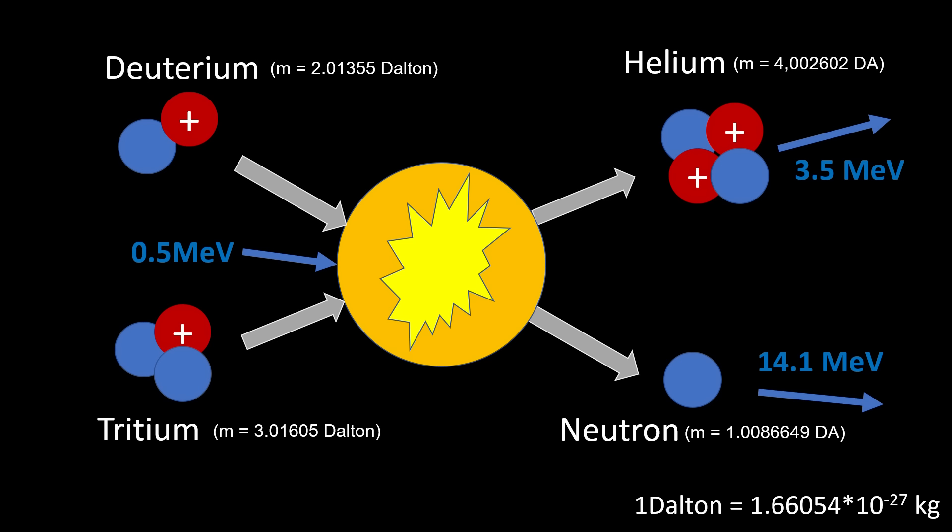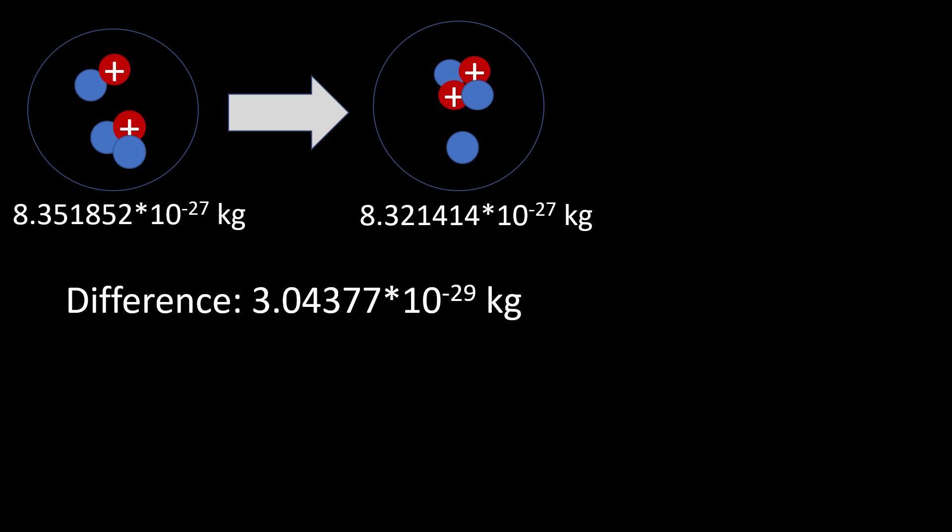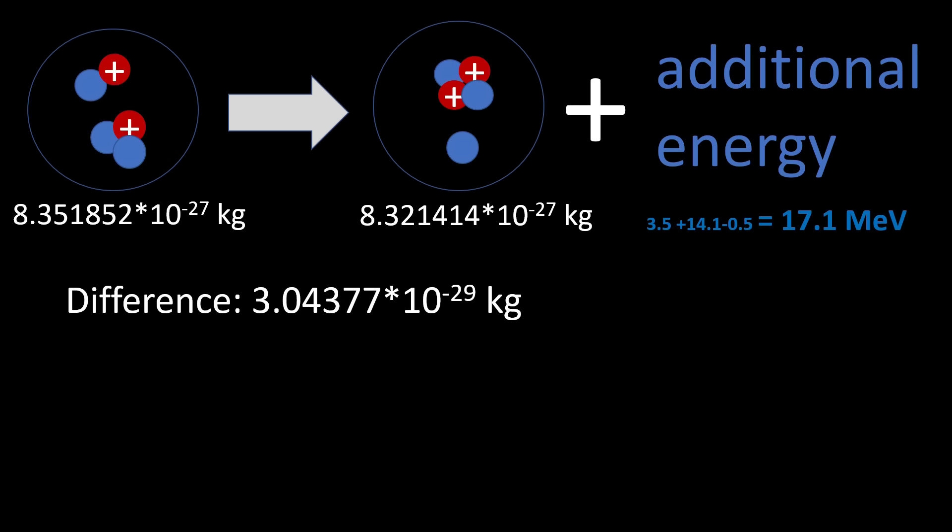However, if we carefully measure the total atomic weights on both sides of the reaction, we see that the total mass of the particles after the reaction is smaller than before the reaction. But we did get something in return, a net amount of 17.1 mega electron volt or 2.74 times 10 to the minus 12 joules.